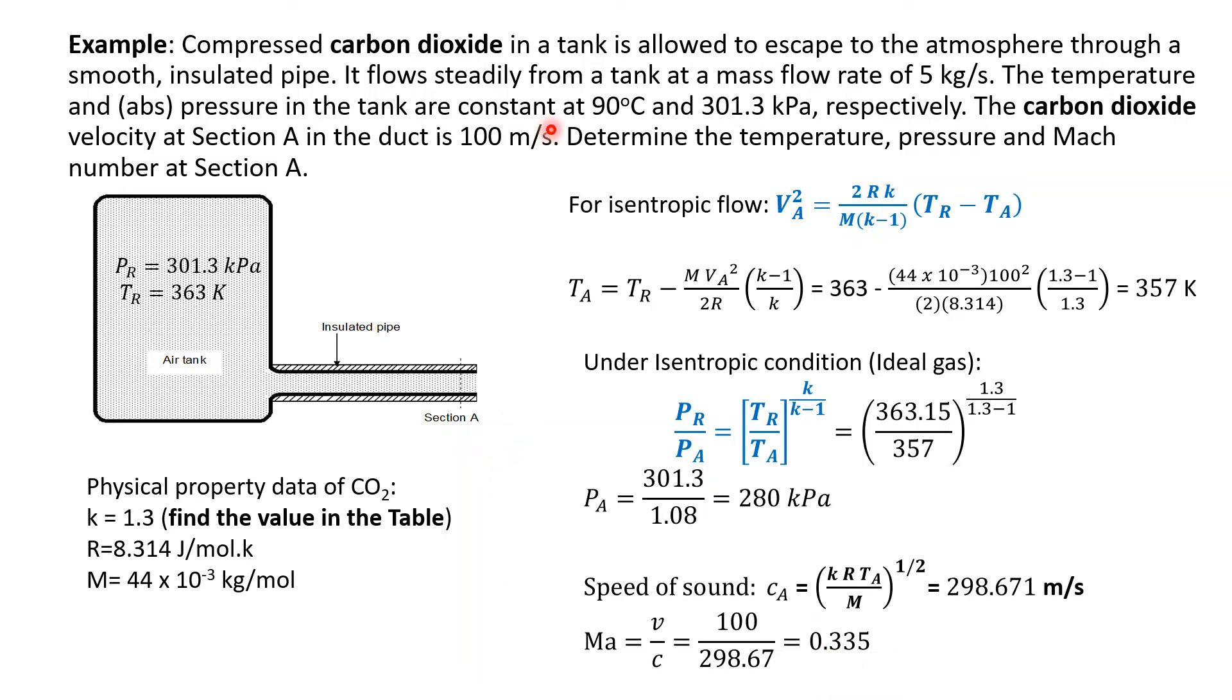...what is important here is probably it is more important to understand the system itself first rather than the calculation. So, we know that the isentropic flow is always from a reservoir to a point in a pipe or in a duct. So, we need to be able to assign which one is the parameter that belongs to the reservoir and which one is the parameter that belongs to the duct. If we know that, the next challenge is just a matter of applying the correct equation.